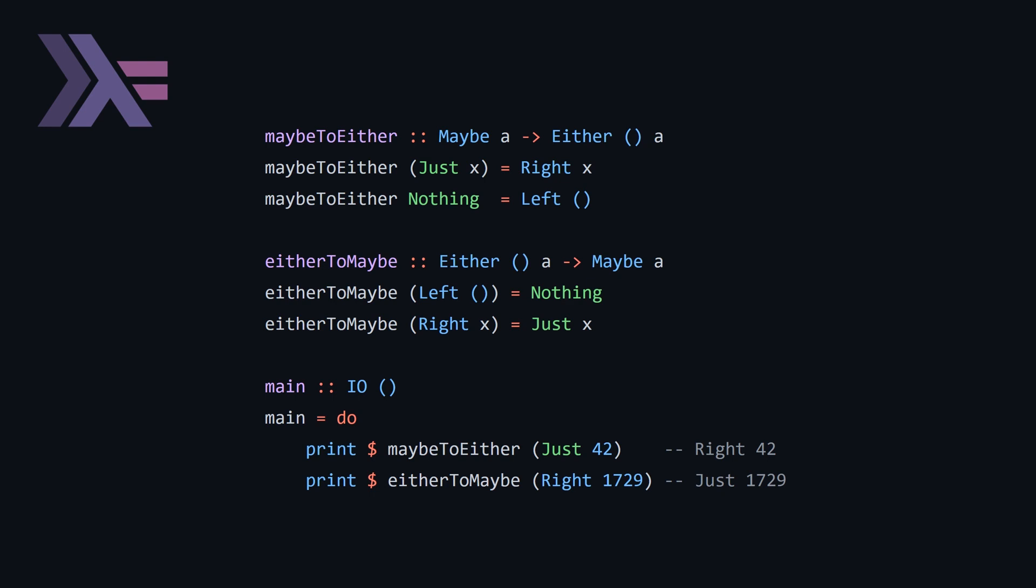But here we have maybe to either and then below that we have either to maybe. So basically, when you have a maybe, we're going to pattern match on the two cases where we have a just or we have a nothing. In the nothing, we map to a left with the unit and just we map to a right with the value x, which is pattern matched here. And then vice versa, we're just doing the same thing for either. We're going to pattern match on left and right and then map the unit to nothing and x to just x. And if we test this with the numbers 42 and 1729, you're going to see the corresponding mappings that are shown above in these two functions. So this sounds like a complicated question, proving isomorphism or showing isomorphism. But really, it's quite straightforward.